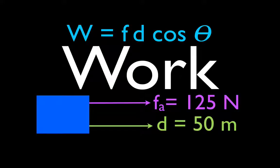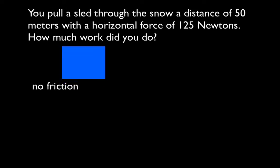In today's video, we are going to calculate the amount of work done by a force on an object. In this case, we have a sled, our nice blue sled here, and it is being moved through the snow a distance of 50 meters by a horizontal force of 125 newtons.